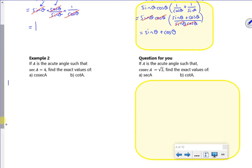Let's have a look at example 2. So it says, if A is the acute angle such that secant A is 4, find the exact values. So you've got an acute angle, you've got exact values. The wording of that is screaming draw a triangle.